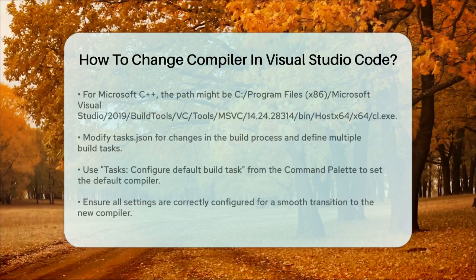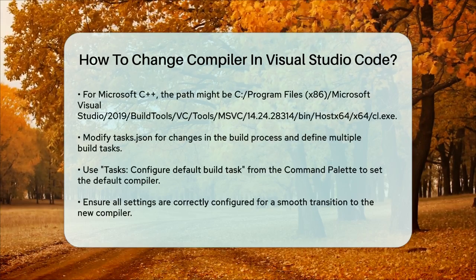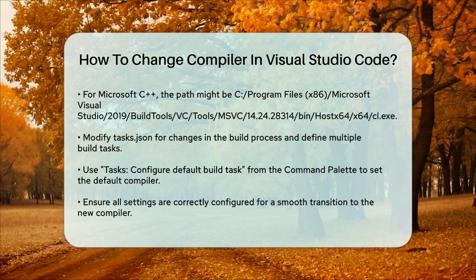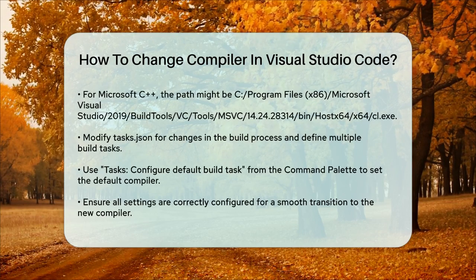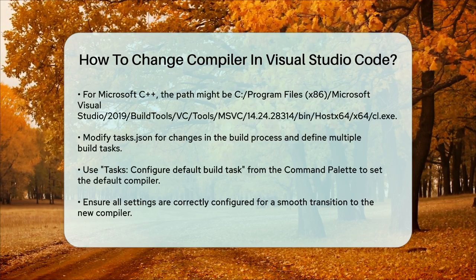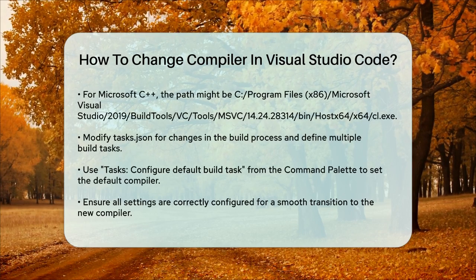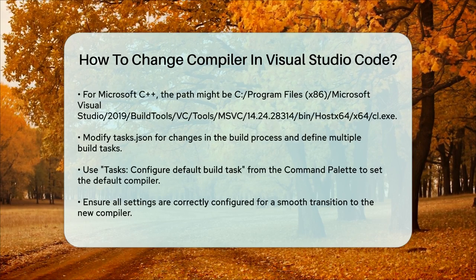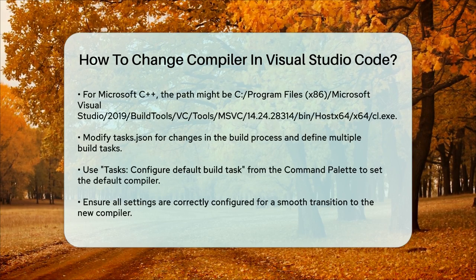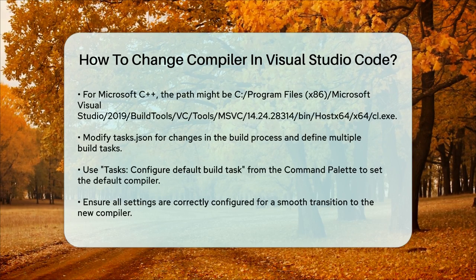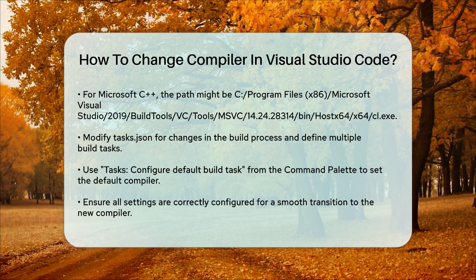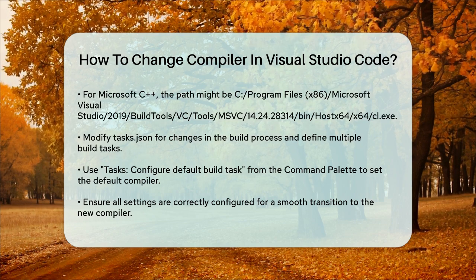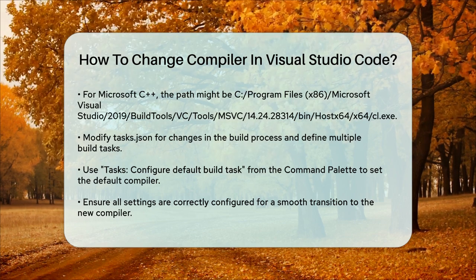Another important file to consider is tasks.json, especially if you're changing the build process. You can define multiple build tasks in this file, and the default task will be used by the play button in VS Code. To change the default compiler, you can run Tasks: Configure Default Build Task from the command palette, or modify the tasks.json file directly.